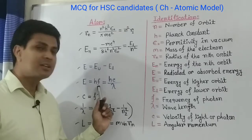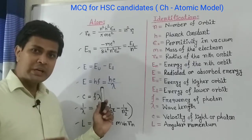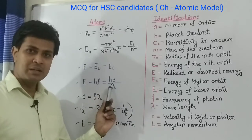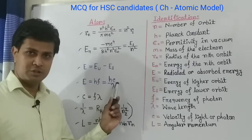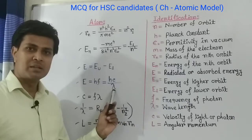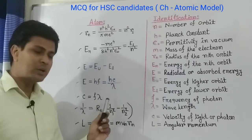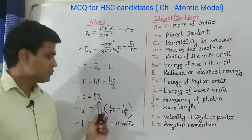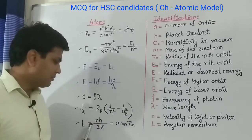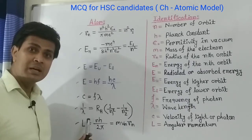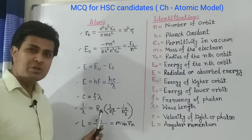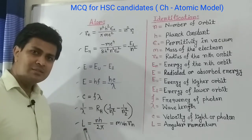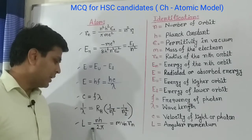To calculate the energy of the photon we have the formula E equals to hf, where f is the frequency. To calculate the frequency we have f equals to c divided by lambda, where c is the velocity of light and lambda is the wavelength. The velocity of light formula is c equals to f lambda. To calculate lambda we have 1 by lambda equals to R_H into (1 by n1 squared minus 1 by n2 squared).